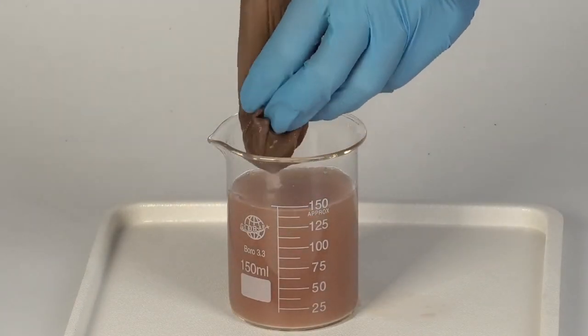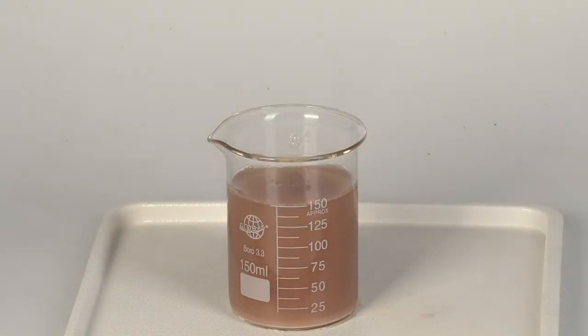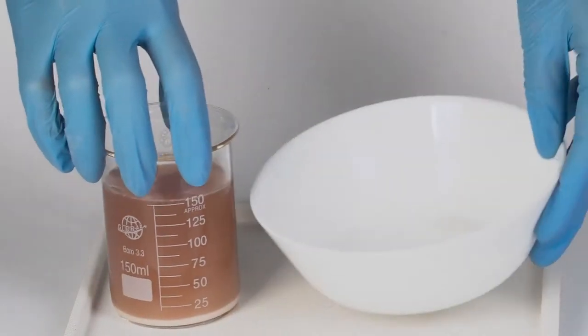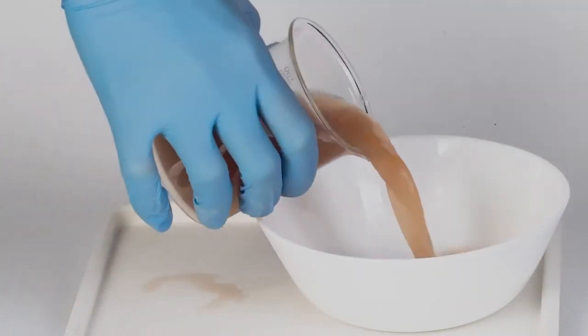Wait for about five minutes to let the precipitate settle on the bottom of the beaker. This precipitate is starch, which will be a base for our plastic.